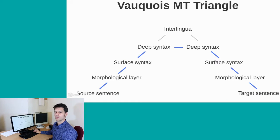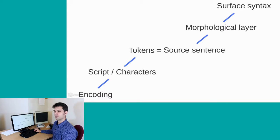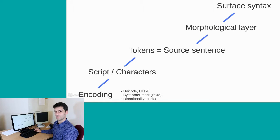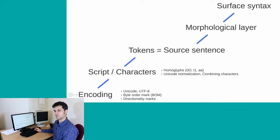This is the WACOA triangle you know from our first talk, and we can extend it at the very beginning. We will then see levels like encoding issues, script issues, and the level of tokens and tokenization. The first two levels were covered by the warm-up exercise. With encoding we talked about Unicode and UTF-8, byte order mark, directional marks and similar issues. With script and characters we talked about homoglyphs — the two A's that look identical but have different codes — and also Unicode normalization and combining characters such as diacritics.